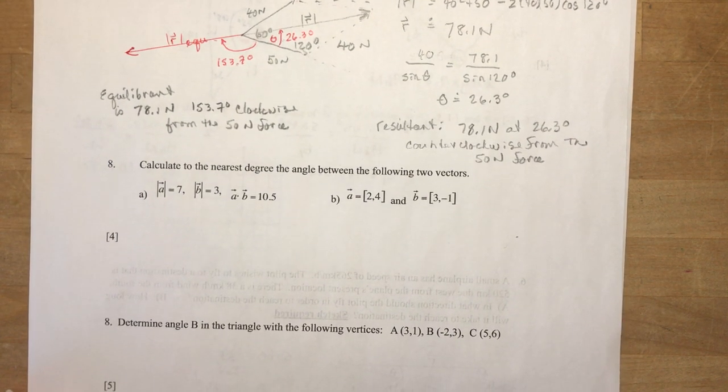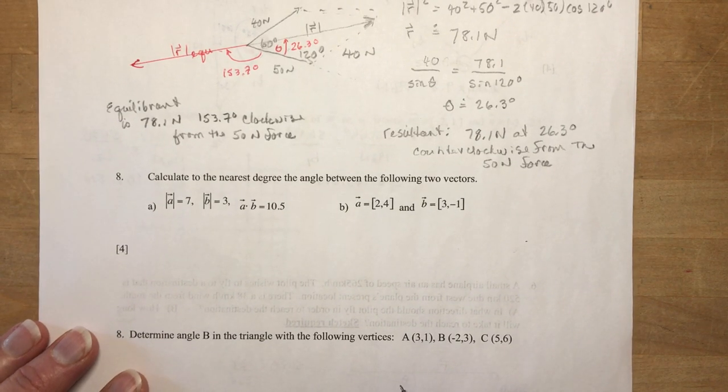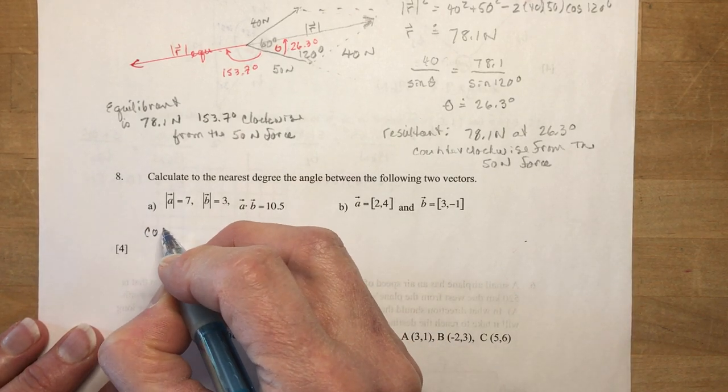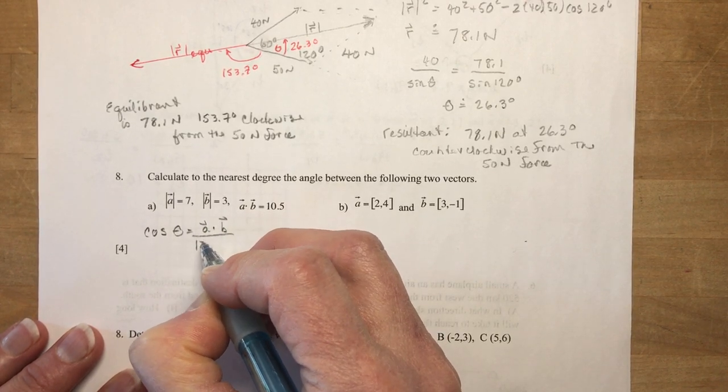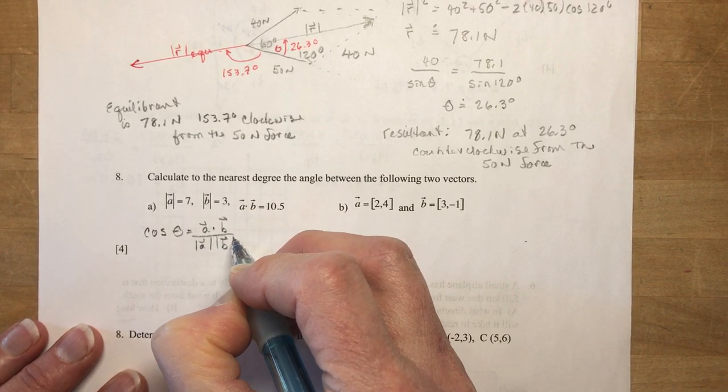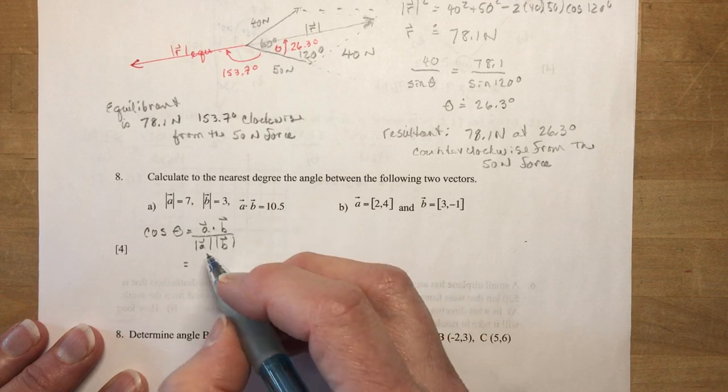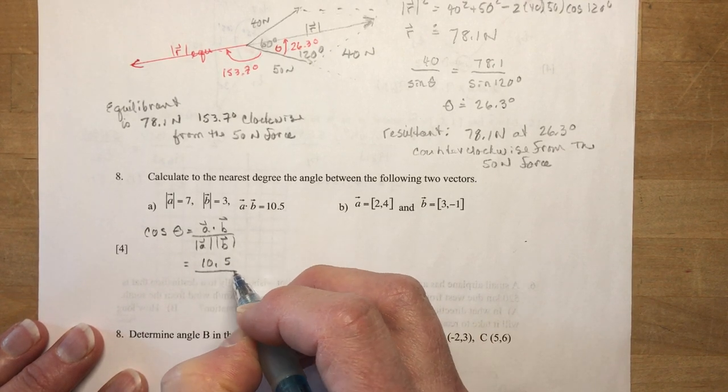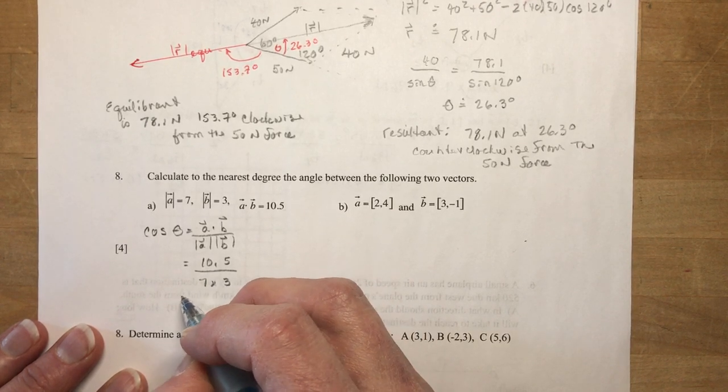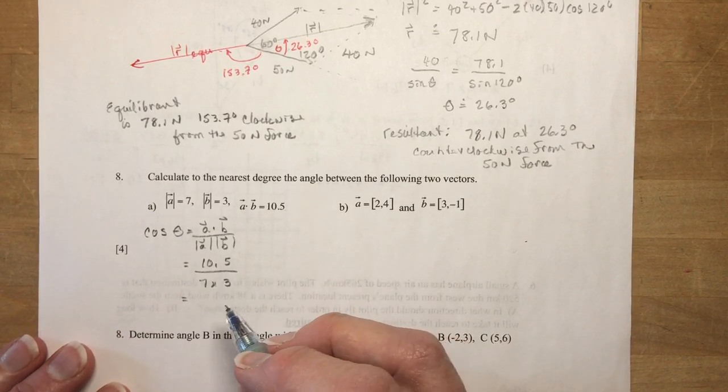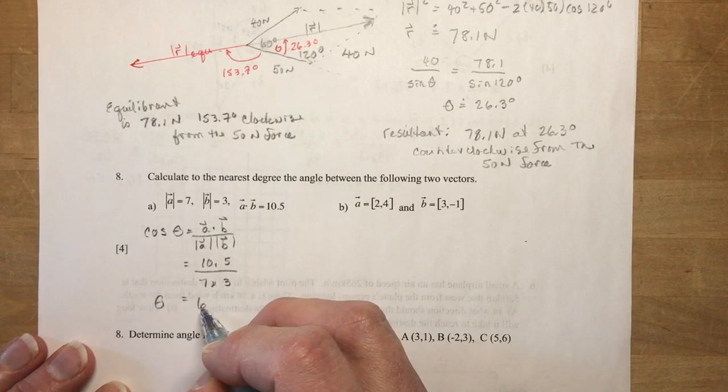Okay, question number eight. Calculate to the nearest degree the angle between the two vectors. So to find the angle, we're using the dot product. So we're going to say that cos of theta is the dot product of a and b divided by the magnitude of a times the magnitude of b. Okay, so the dot product. Oh, I gave it to you right here. 10.5 magnitude of a. So this is going to be 7 times 3. And that's 10.5 divided by 21. So theta is approximately actually it's actually 60 degrees. Right that you can do that little calculation.